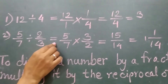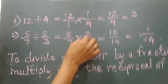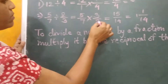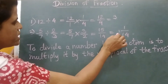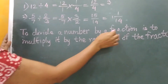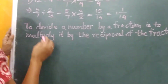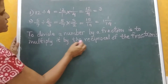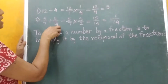5 upon 7 as it is — when divide is converted into multiplication, we take the reciprocal of it: 2 upon 3 is reversed into 3 upon 2. So 5 multiplied by 3 gives 15, and 7 multiplied by 2 gives 14, which gives 1 upon 14. The rule is: to divide a number by a fraction is to multiply it by the reciprocal of the fraction. The first number remains the same and the second one we take as reciprocal.